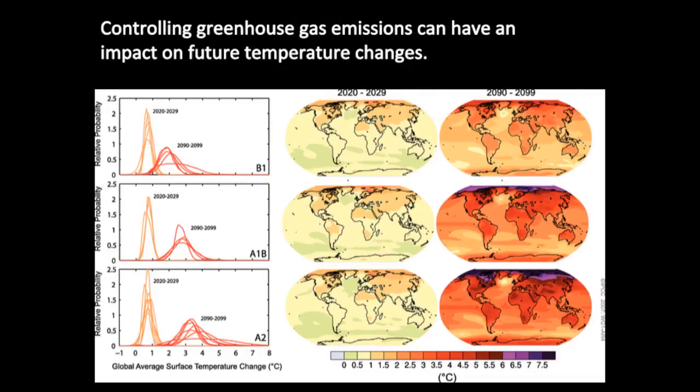These graphs and images show the long-term impact of three different scenarios for controlling the emission of greenhouse gases. In each case, there will be an increase in average global temperature. But if we do nothing there will be a much bigger impact to Earth's climate system by our greenhouse gases.